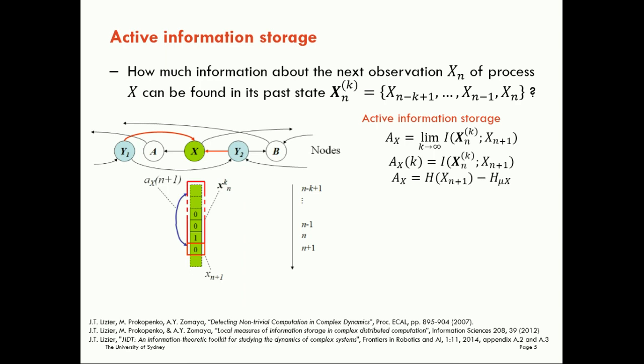We can write this down in terms of other measures that we already know. The information from the past about the next value is simply a difference between the single value entropy, the single sample entropy here, and the entropy rate. And that makes sense, because the entropy rate, as we saw from our previous session, was telling us how much uncertainty is left in the variable once we have accounted for the past. So if we look at how much uncertainty we had in total, then how much is left after we've accounted for the past, that difference is how much information we gained by looking at the past.